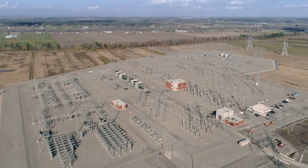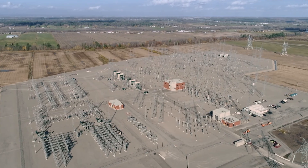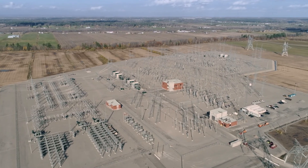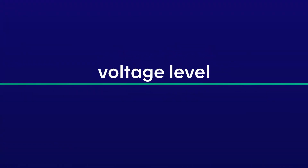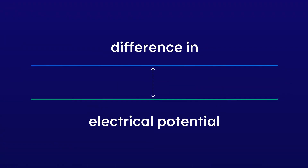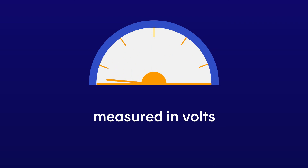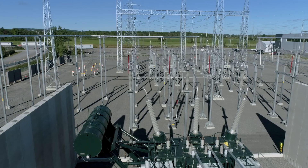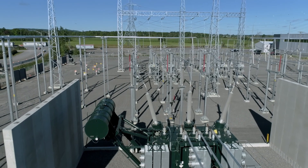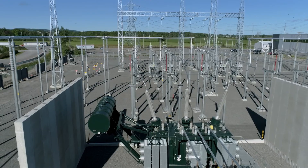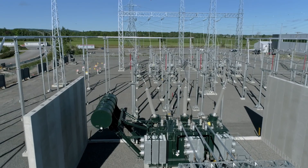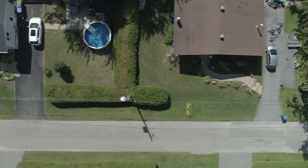A substation connects parts of the power grid that aren't at the same voltage level. Voltage is the difference in electrical potential between two points, and it's measured in volts. If there's no voltage, there's no power.